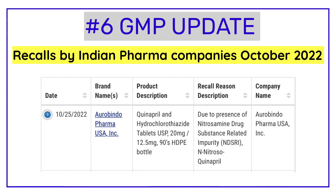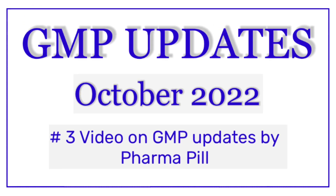USFDA stated that Aurobindo Pharma had not received any reports of adverse events related to this recall, and the recall has been classified as a Class 3 recall. A Class 3 recall, as per USFDA, is initiated in a situation where use or exposure to a violative product is not likely to cause adverse health consequences. Those were the six important GMP updates for October 2022 that every pharma professional should be aware of. Hope you found the video helpful — see you in the next video, bye and happy learning.